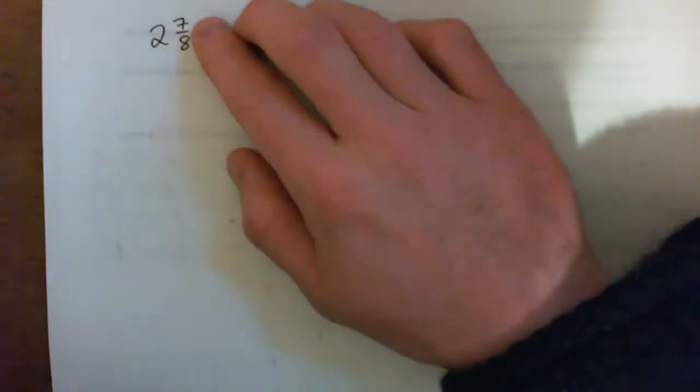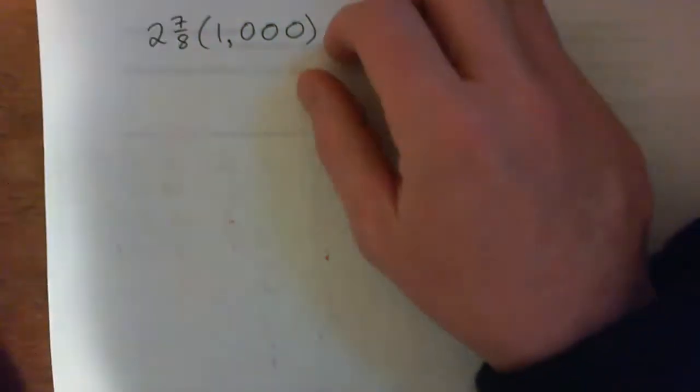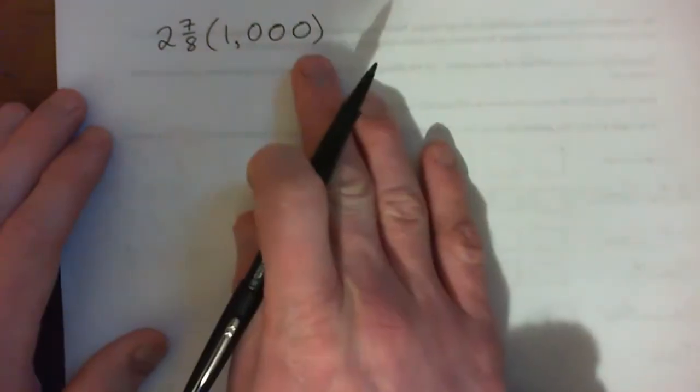Each share has increased by two and seven-eighths of a dollar — two dollars and seven-eighths. A thousand shares has increased by how much? That's what we're trying to figure out. Each share increases by two dollars and seven-eighths, so if I multiply that by a thousand, that would be the increase overall. We've got to go two and seven-eighths times a thousand.